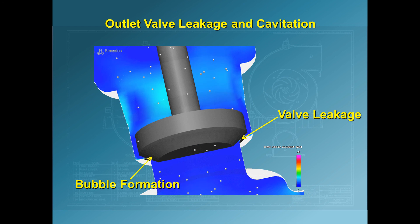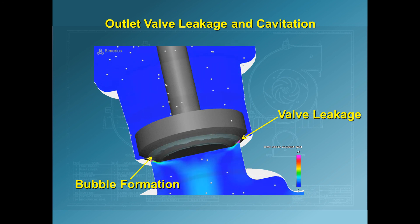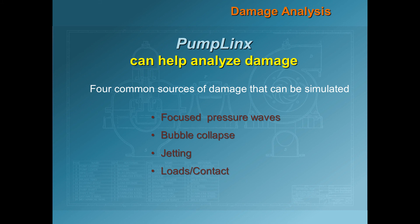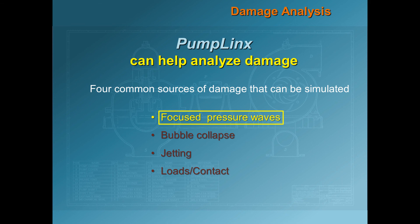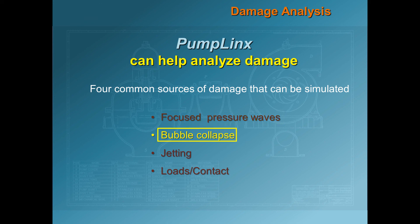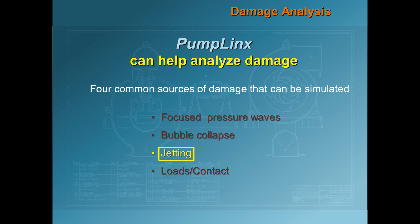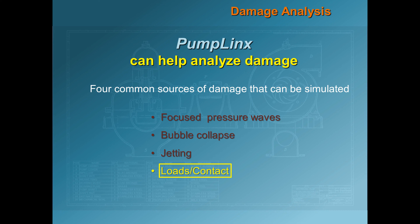This type of behavior often leads to hardware damage. Here are some common sources of damage which can occur in devices with valves and other systems with high pressure gradients. Earlier, we saw that pressure waves were created when the valves opened or closed. Also, jetting occurred under the outlet valve which led to the formation and collapse of bubbles. Finally, we saw that the outlet valve did not close completely, which caused leakage and jetting. The incomplete closing of the outlet valve was modeled this way intentionally to show how real hardware effects could be taken into account in a Pumplinks simulation. Another source of damage can occur when physical contact between components of the system occurs.